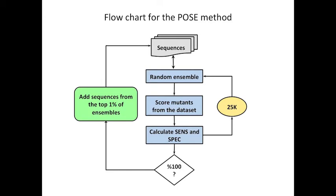So you can imagine over time, the sequence pool from which we're drawing our random ensembles becomes enriched for the sequences that best allow us to predict our phenotype, i.e. cystic fibrosis. It's from this process that we derive POSEs, which we can subsequently use to predict the disease liability of other CFTR missense mutations.